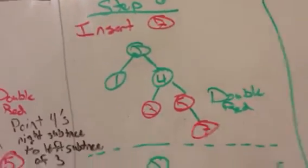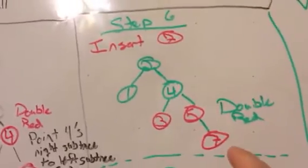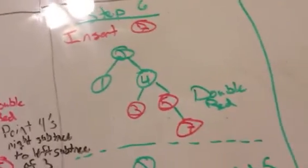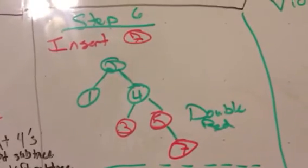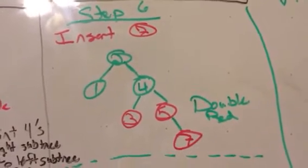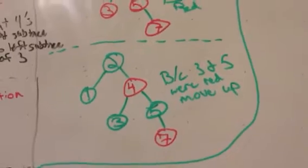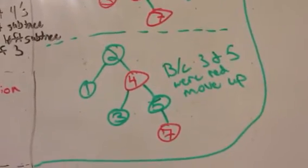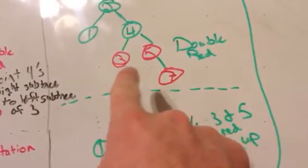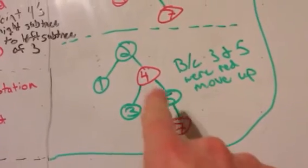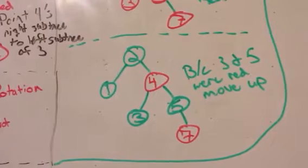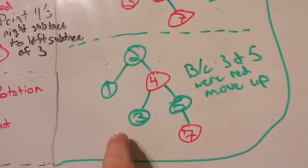Going to step 6, if we insert 7 in, we can see that again it violates the double red. And yeah, my black ink kind of ran out so now it's a green-red tree. Anyways, we'll just assume the green is black. Because of the red being 3 and 5 here, we can just move it up 1.